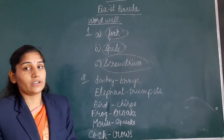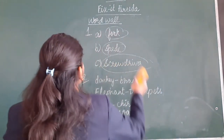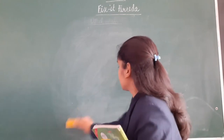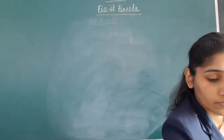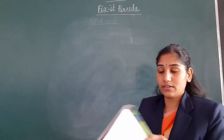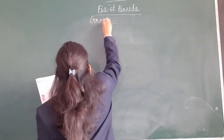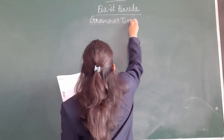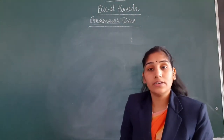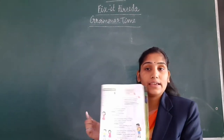So these are the answers for part number 2. Now children, we will move to the next question. We will come to page number 131. Here, we will start with the grammar timer. In the grammar class, we have learnt about different types of sentences. Let us quickly look at the explanation part.